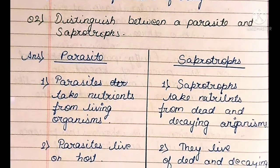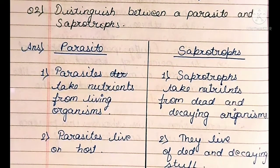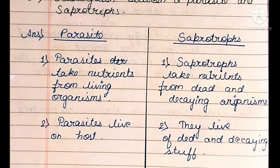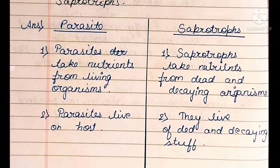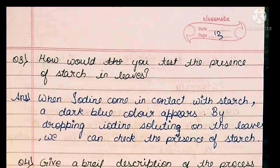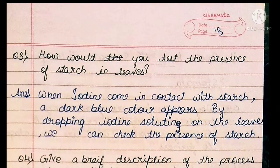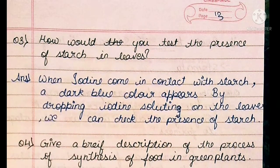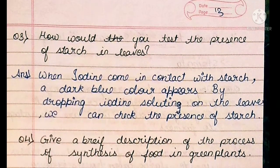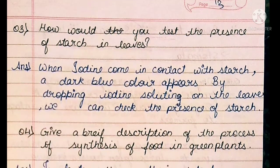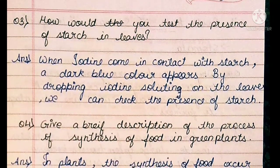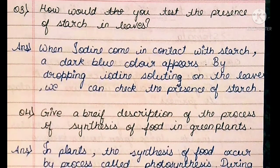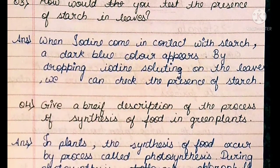A parasite lives on a host, whereas saprotrophs live on dead and decaying matter. Question 3: How would you test the presence of starch in a leaf? Answer: When iodine comes in contact with starch, a dark blue color appears. By dropping iodine solution on the leaves, we can check the presence of starch.